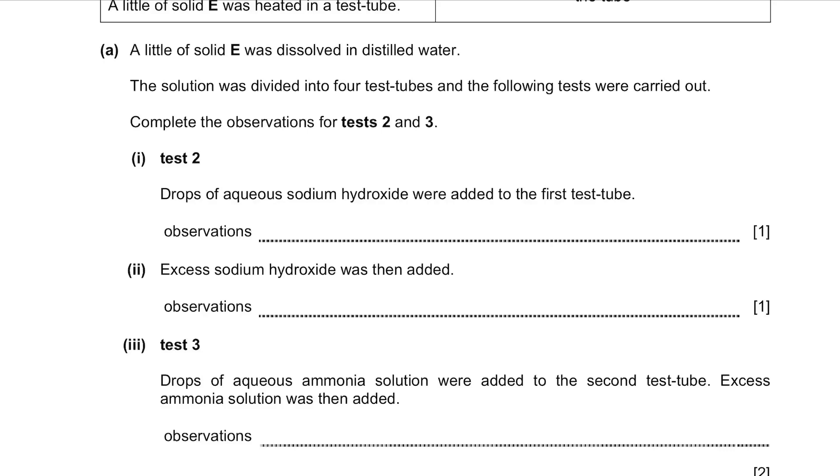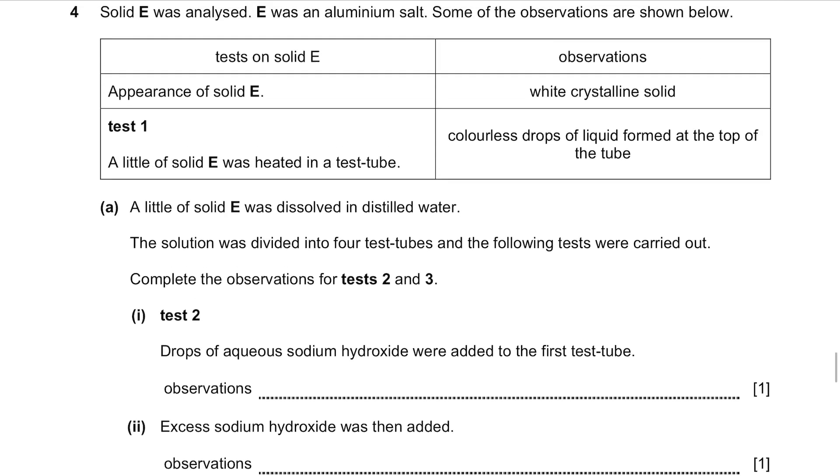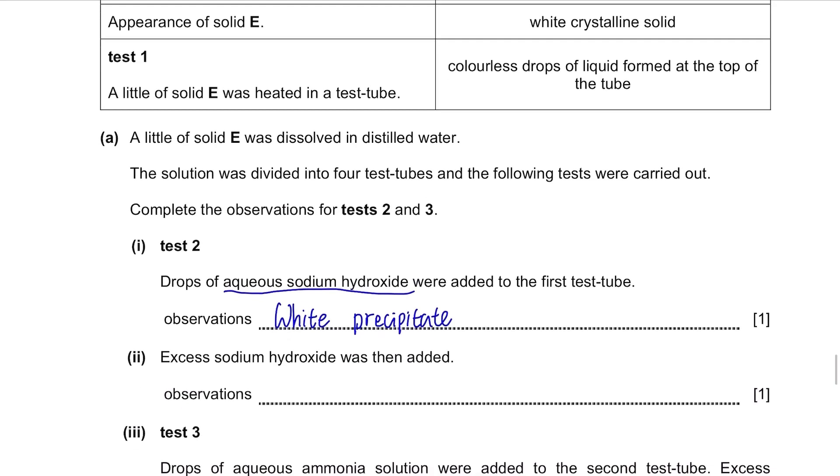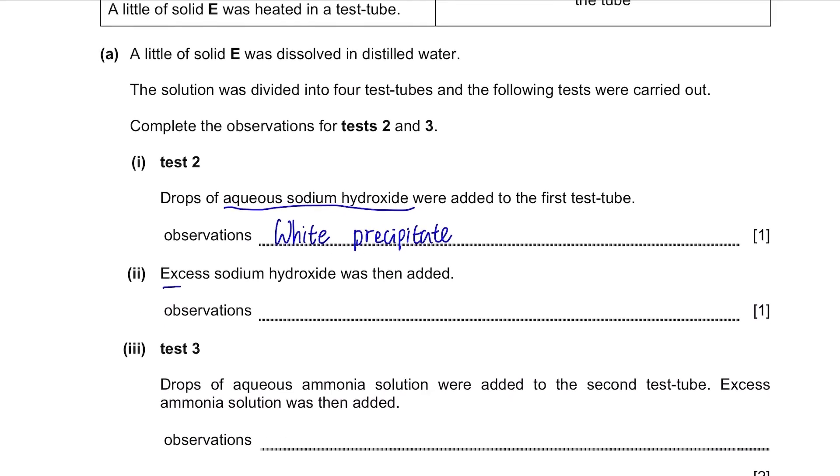Test 2. Drops of aqueous sodium hydroxide were added to the first test tube. So the question said that it's an aluminum salt. When you add just few drops of aqueous sodium hydroxide to it, white precipitate will be formed. You need to memorize this test and the result. Then next, when you add excess sodium hydroxide, the white precipitate will be dissolved.